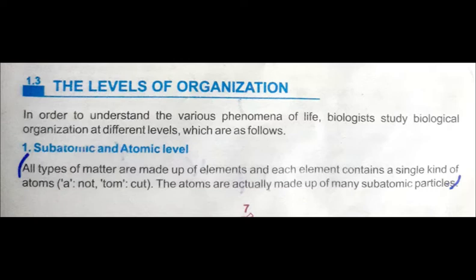What is an atom? An atom is made up of further smaller particles called electrons, protons, and neutrons — these are called sub-atomic particles. All types of matter are made up of elements, and each element contains a single kind of atom. Those atoms are made up of sub-atomic particles — so all atoms are made up of sub-atomic particles.